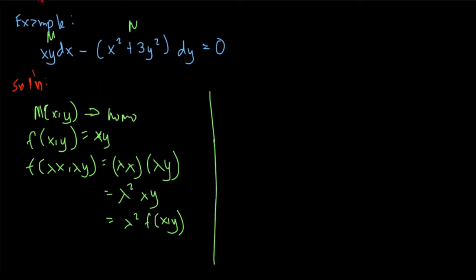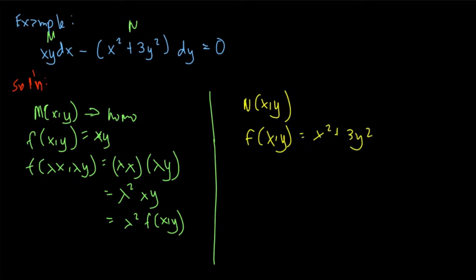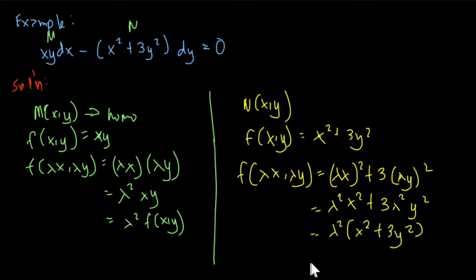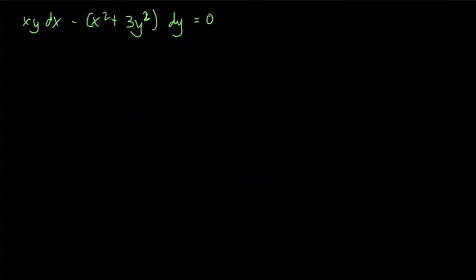For the other part of our equation, N: our N(x, y) = x² + 3y². We need to test if this is also homogeneous. So f(λx, λy) = (λx)² + 3(λy)² = λ²x² + 3λ²y² = λ²(x² + 3y²) = λ² · f(x, y). So this is also homogeneous. We have proven that this equation is homogeneous.